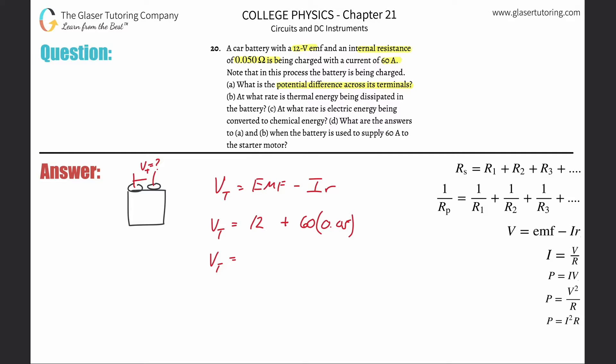Nope, nope, nope, nope, nope, nope. 12 plus 60 times 0.05. 15. So 15 volts. That is the potential across the terminals. That's the terminal voltage. 15 volts.